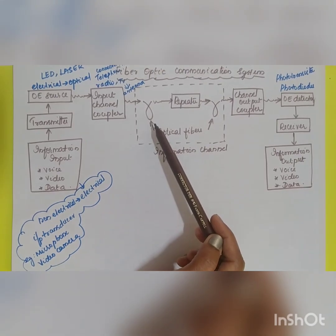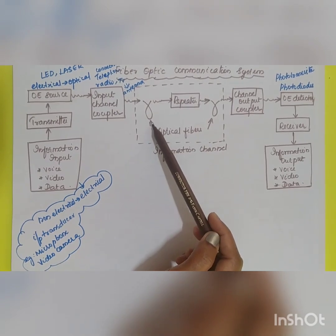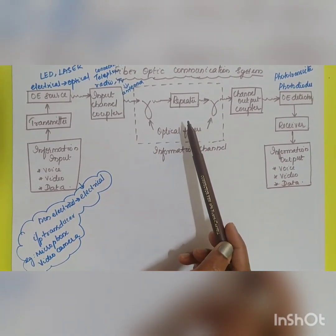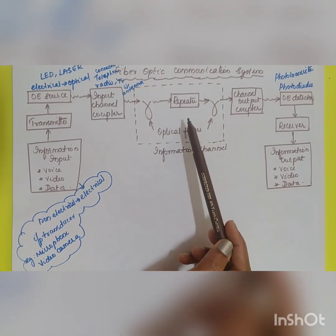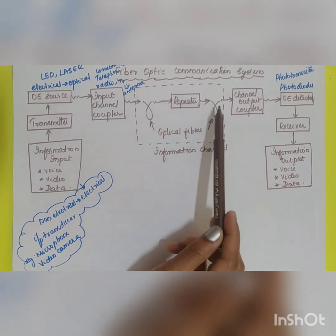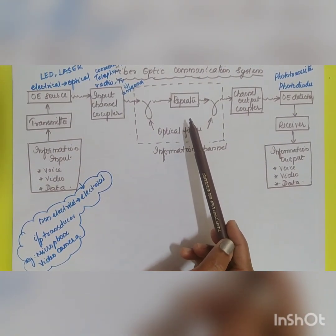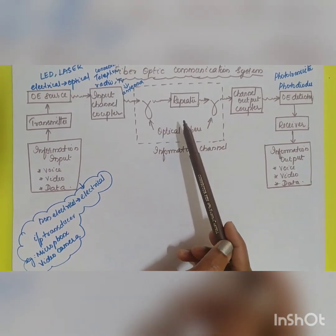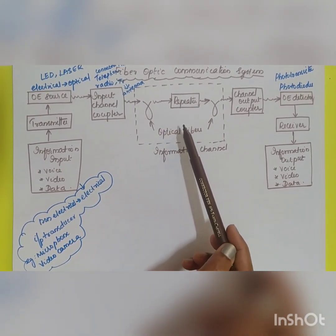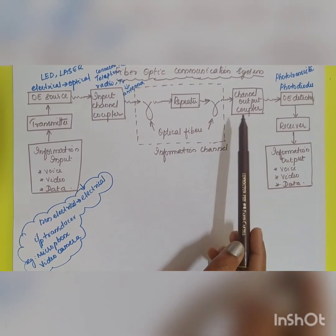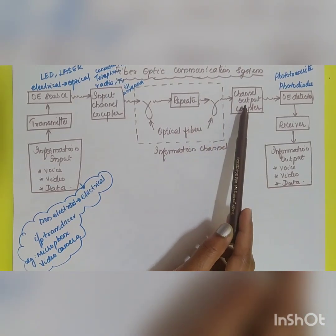Light travels through the fiber by the phenomenon of total internal reflection. These are the characteristics of the fiber optic channel. A repeater is added because all signals transmitted through the channel undergo absorption, scattering, and attenuation. To strengthen the signal, a regenerator, repeater, or optical amplifier is used — for example, an EDFA (Erbium-Doped Fiber Amplifier).